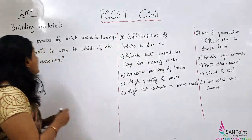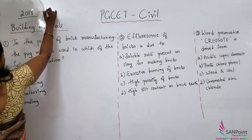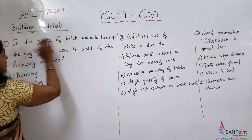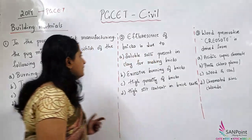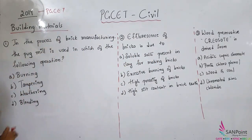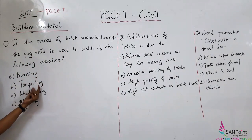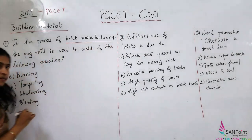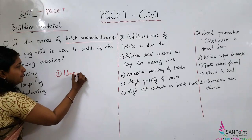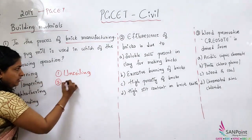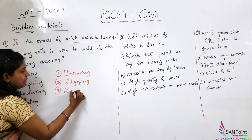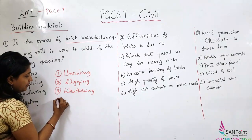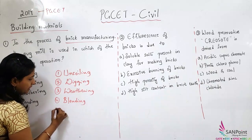We'll now solve questions on building materials from the 2019 PGCE-T question paper. Three questions were asked on building materials; two were on brick and one on timber. First question: in the process of brick manufacturing, the pug mill is used in which of the following operations? There are different steps in manufacturing bricks: unsoiling, weathering, blending, then tempering. Before this you can add cleaning.